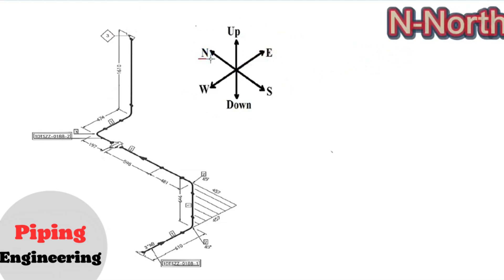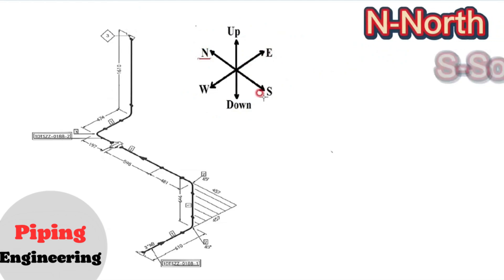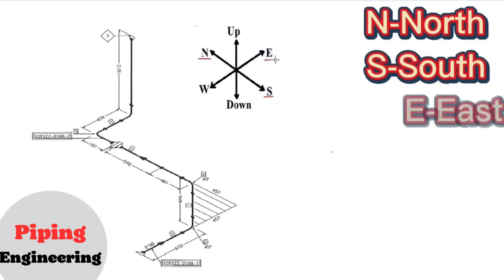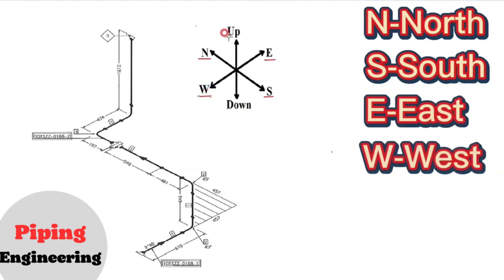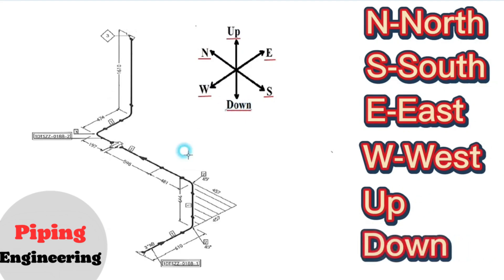N means north. S means south. E means east. W means west. Up means up. Down means down directions.